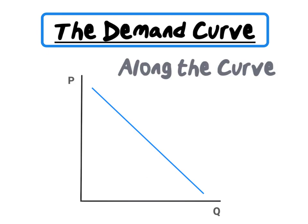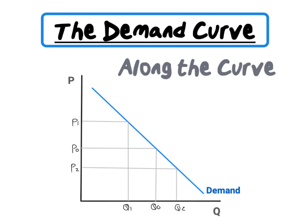Let's look at a movement along the demand curve. Our starting point will be at P0 and Q0. We will investigate what a change in price will do to our quantity demanded. If the price increases from P0 to P1, we illustrate this by an upward movement along our demand curve from point A to point B. An increase in price from P0 to P1 will have a corresponding decrease in quantity. Our new quantity therefore corresponds with point B, giving us Q1. Quantity decreased from Q0 to Q1 due to an increase in price from P0 to P1.